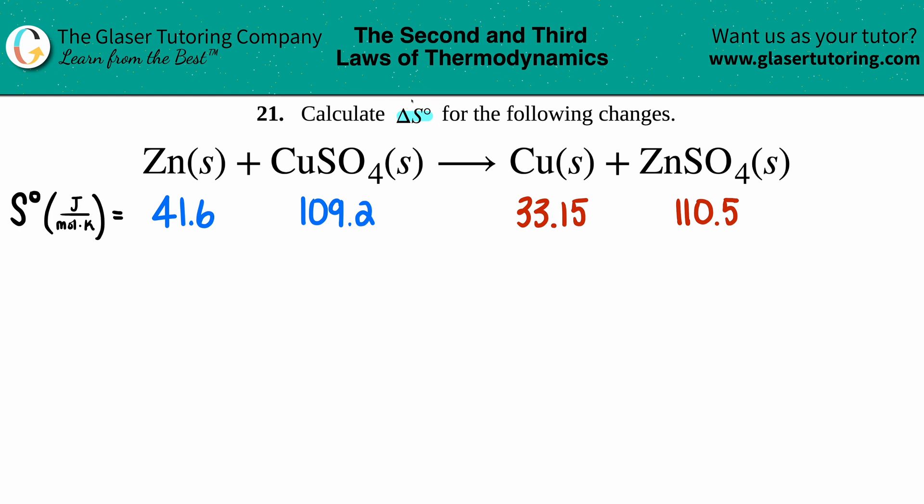Well, delta S - that triangle means change, and we're looking for the change in the entropy, the randomness, disorder of molecules, chaos of what's going on in the system. We're trying to find out that change, and this notch means that we're taking into consideration the standard values.